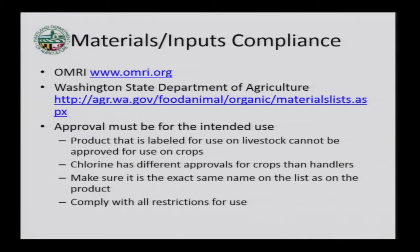On inputs: the easiest way to get an input approved is if it's already approved by the Organic Materials Review Institute, OMRI, or listed on the Washington State Department of Agriculture's website. We also contract with another certifier, and if it's on their list we can approve it quickly. Otherwise we do our own material review, which can take time — sometimes companies won't release information to us because we're smaller. If you can find OMRI-approved products, that's better, but we review other products as well.